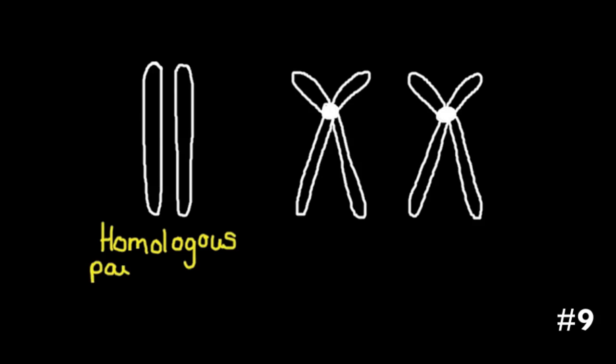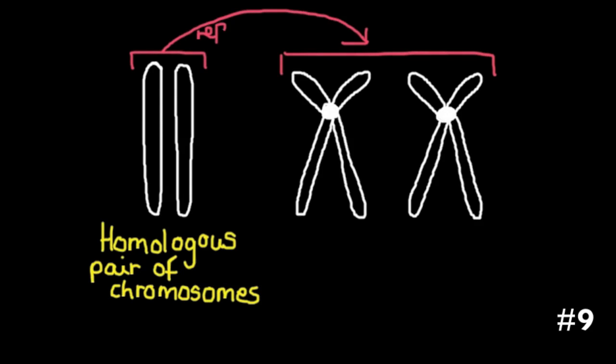Mentioning homologous pairs of chromosomes, you have to distinguish between a homologous pair and sister chromatids. Sister chromatids are formed after each chromosome in the homologous pair replicates to produce identical copies of itself. Only after replication do you have sister chromatids. One chromosome, each chromosome in the pair, existing as sister chromatids.